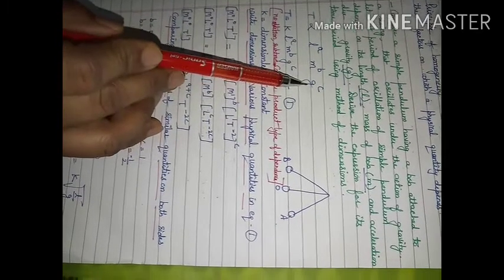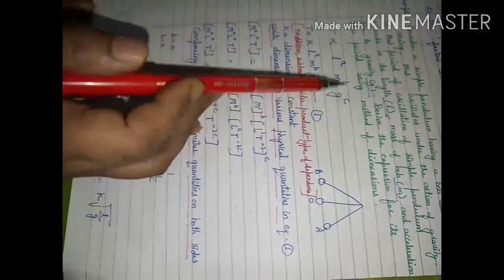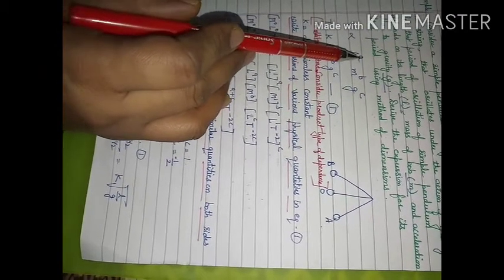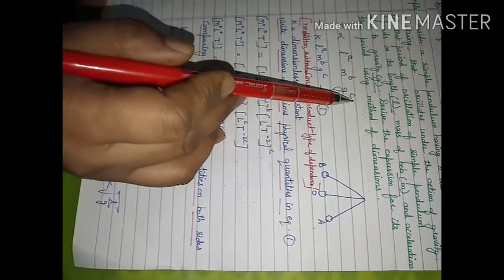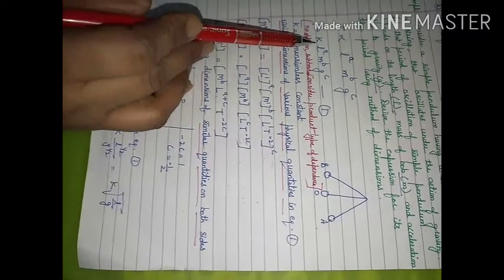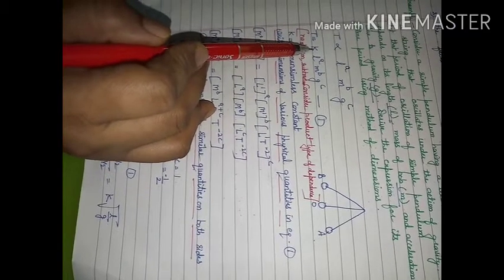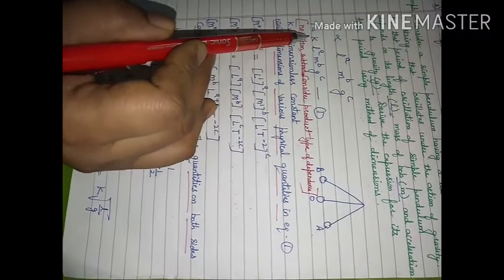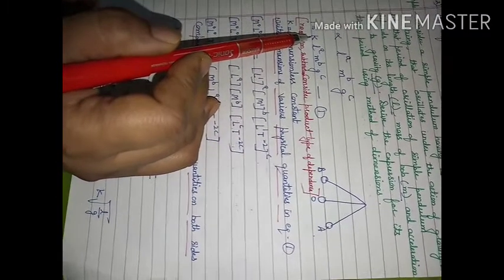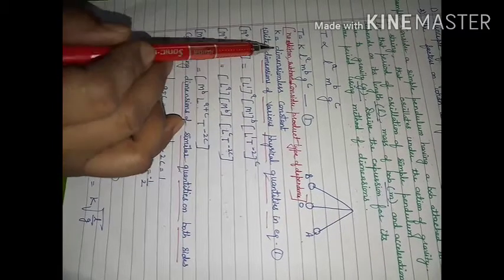We don't know the powers of length, mass, and acceleration due to gravity, nor whether these powers are positive or negative. So we consider time period T is directly proportional to length raised to power a, mass raised to power b, and acceleration due to gravity raised to power c. Removing the proportionality sign introduces a constant of proportionality k. We always consider this constant k to be dimensionless, because a key limitation of dimensional analysis is that we cannot determine the value of this constant.